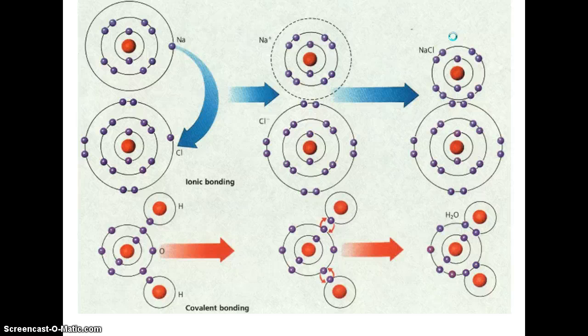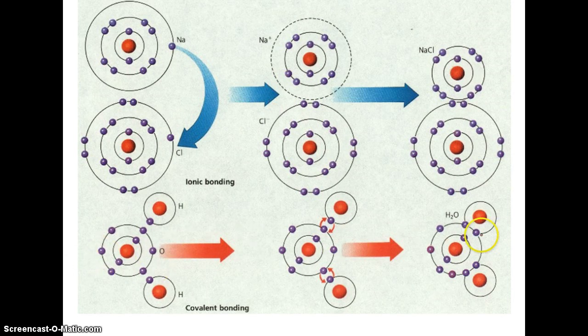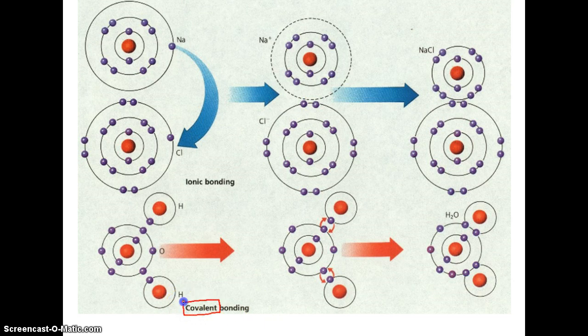Now we want to end this lecture by talking about some specific types of chemical bonds that can stick different atoms together to make much larger molecules. Let's focus on the bottom example first. We have some bonding represented by these red arrows and a different variety of bonds represented by these blue arrows. Let's focus on the red arrows first — this is a type of bond known as a covalent bond.